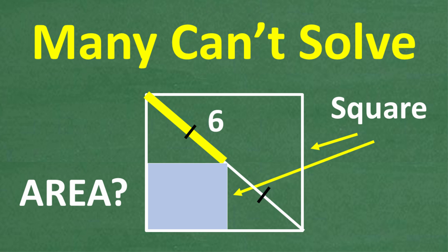We want to find the area of that small square, and this is all the information we have — the midpoint of the diagonal is six units long. If you can calculate the area of this small square, go ahead and put your answer in the comment section. Feel free to use a calculator as well. Then I'm going to show you how to solve this problem.